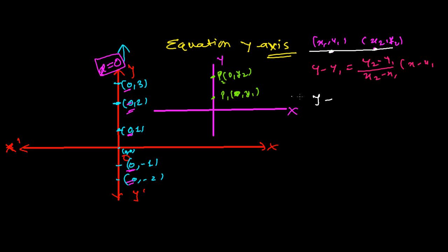Substituting into the formula: y minus y1 equals (y2 minus y1) over (x2 minus x1) times (x minus x1). Here x2 is zero and x1 is zero, so the denominator becomes zero minus zero. And x1 is zero, so the term (x minus x1) becomes (x minus zero), which is x.